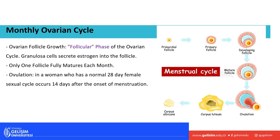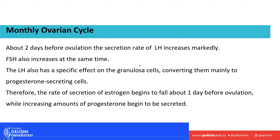About two days before ovulation, LH secretion increases sharply, accompanied by an increase in FSH. LH also acts on granulosa cells, converting them into progesterone-secreting cells. As a result, progesterone secretion increases while estrogen secretion starts to drop — estrogen levels fall about a day before ovulation.